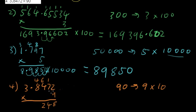9 times 8 is 72 plus 4 gives us 76. Put in the decimal place and we have then 9 times 3 is 27 plus 7 is 34.